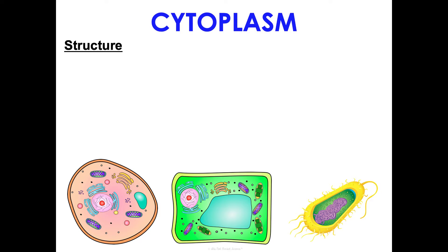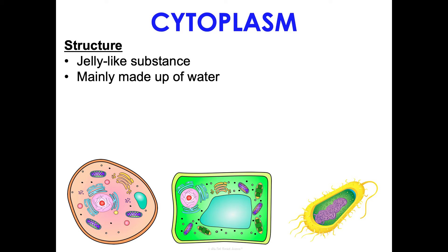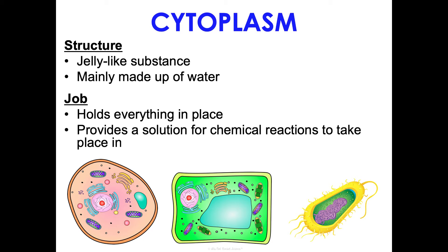The cytoplasm is a jelly-like substance — mainly water — that holds everything in place and is the solution where a ton of chemical reactions take place in the cell. When labeling it on a picture, it's just that empty space. It's also found in prokaryotic cells — it's one of those four structures that all cells have.